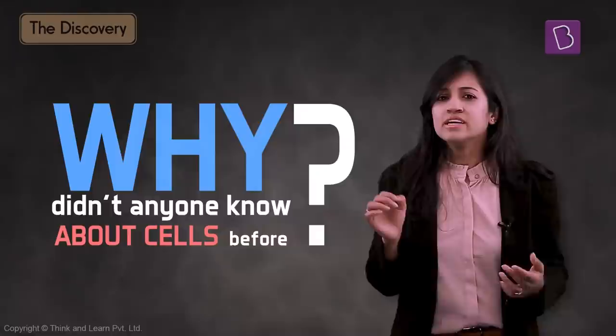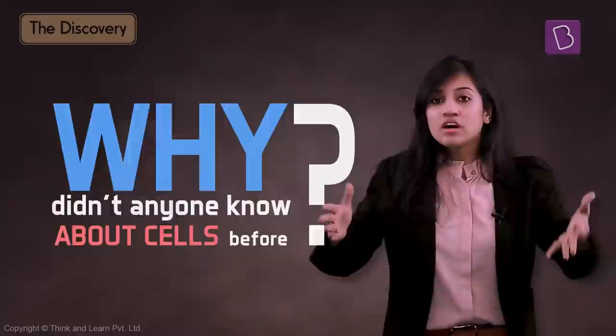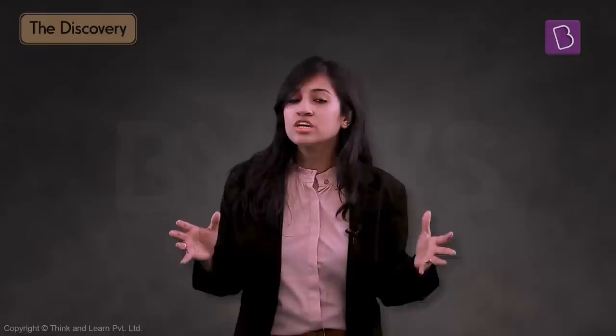The most obvious reason is that most cells are really tiny, and they did not have any instruments to observe them back then. You can't discover something if you cannot see it. The microscopes we have today did not exist back then. It was only around the 16th century that lenses capable of observing really tiny objects began to flourish.